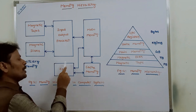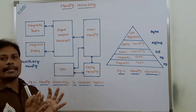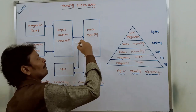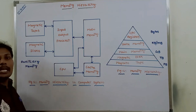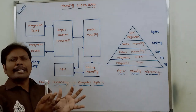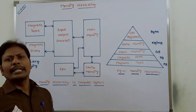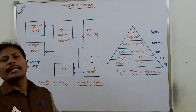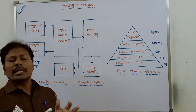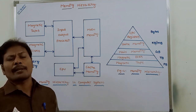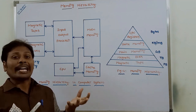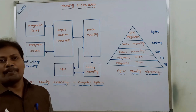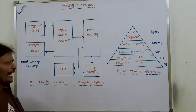To recap the four levels: first level — CPU registers; second level — cache memory; third level — main memory; fourth level — auxiliary memory. Why are we dividing memory into three or four levels? The reason for dividing the memory into three or four levels of memory hierarchy is economics — that is, cost considerations.